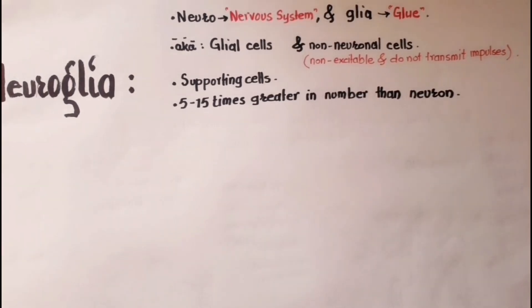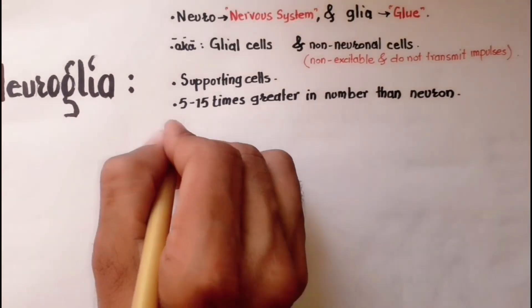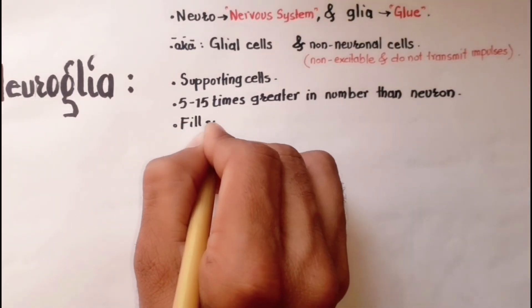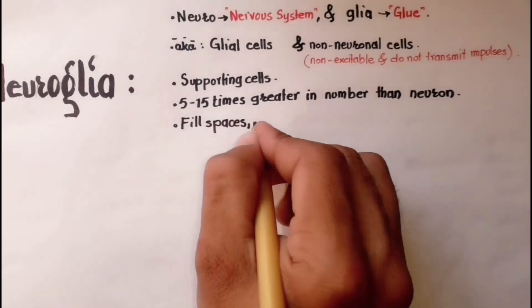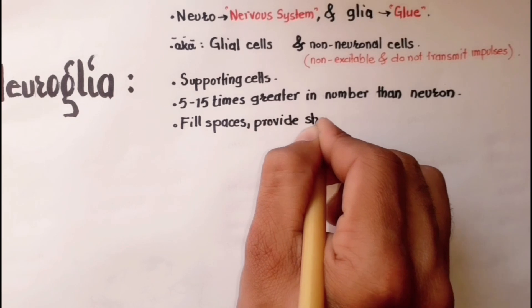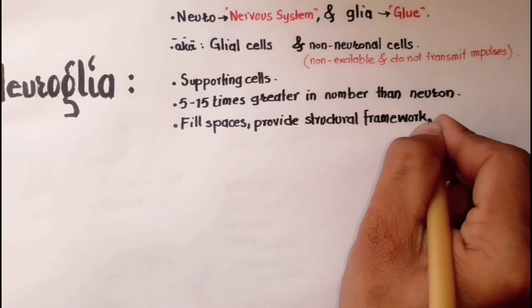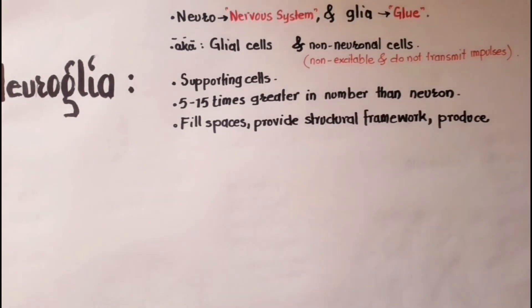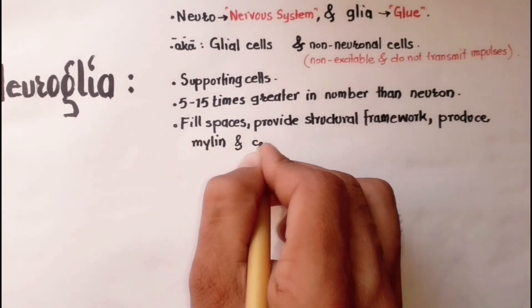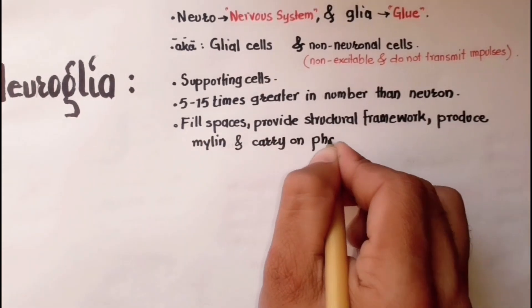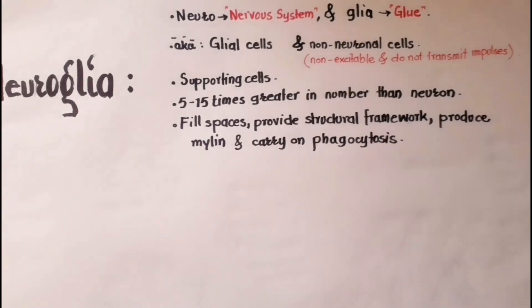Neurons cannot exist without neuroglia. Neuroglial cells provide structural frameworks, produce myelin, and carry on phagocytosis.